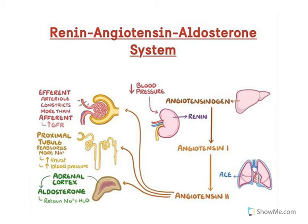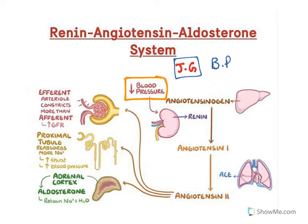The renin-angiotensin-aldosterone system starts when blood pressure is reduced. There is a special apparatus in the nephron known as the juxtaglomerular apparatus. The job of this apparatus is to check blood pressure. Whenever there is a decrease in blood pressure from the kidney, it stimulates the release of renin. Renin is an enzyme which acts on the substrate angiotensinogen. Angiotensinogen is in the blood plasma — it is released from the liver.